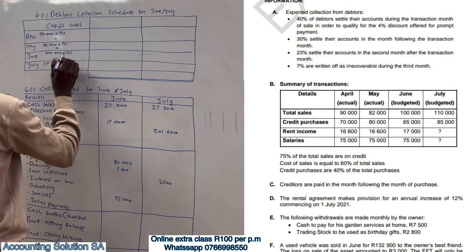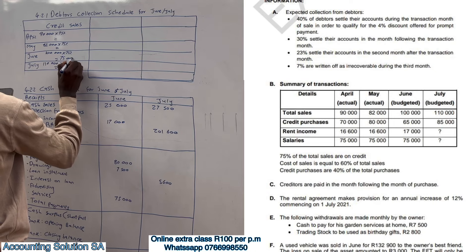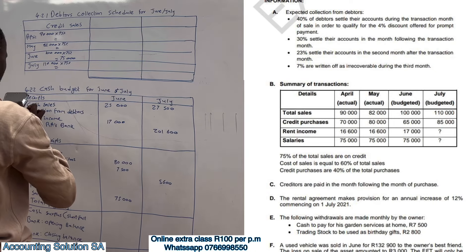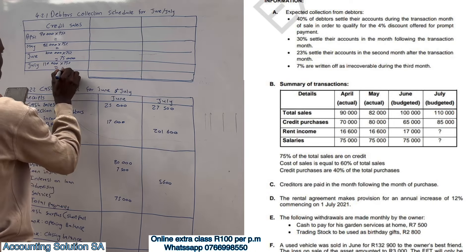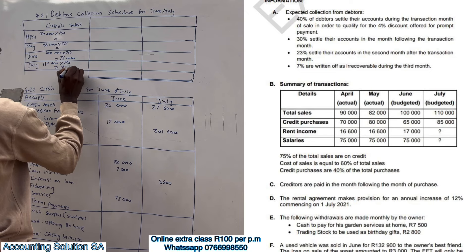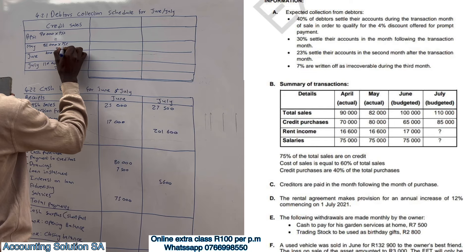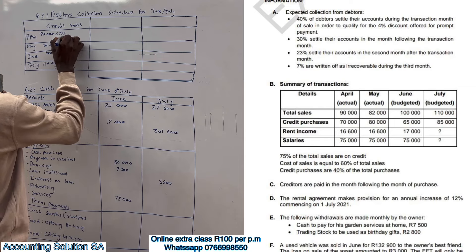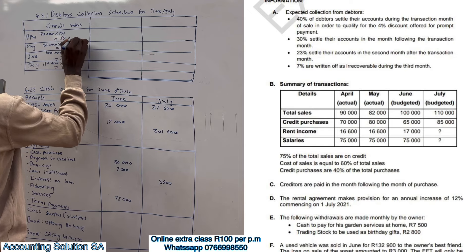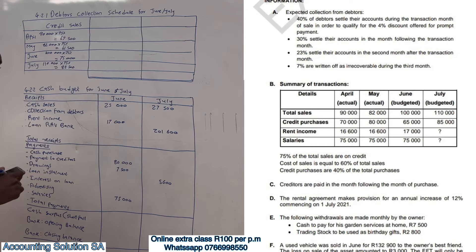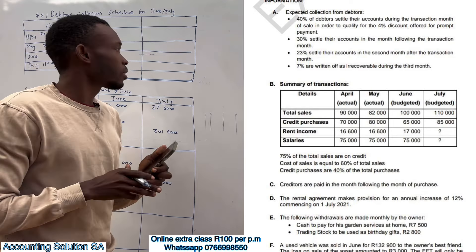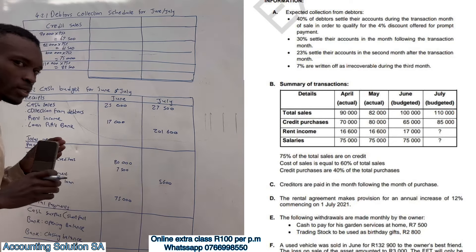The answers are: April gives 67,500; May gives 61,500; and for June it's going to be 75,000; July is 82,500. Very simple and straightforward. This was worth 4 marks.